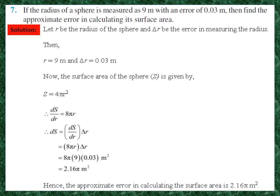Next, question 7: if the radius of a sphere is measured as 9 m with an error of 0.03 m, find the approximate error in calculating its surface area. Let r = 9 and delta r = 0.03. The surface area is S = 4πr². So dS/dr = 8πr, and dS = (dS/dr) × delta r = 8πr × 0.03. Putting r = 9: dS = 8π × 9 × 0.03 = 2.16π m². Hence the approximate error in the surface area is 2.16π m².